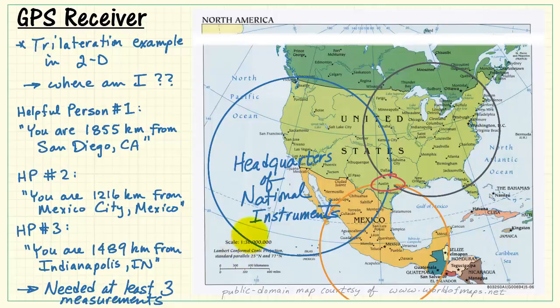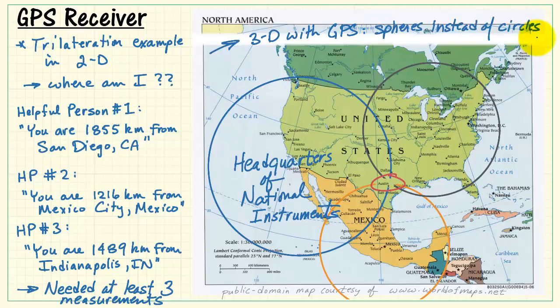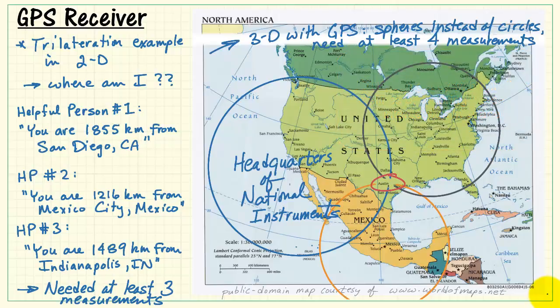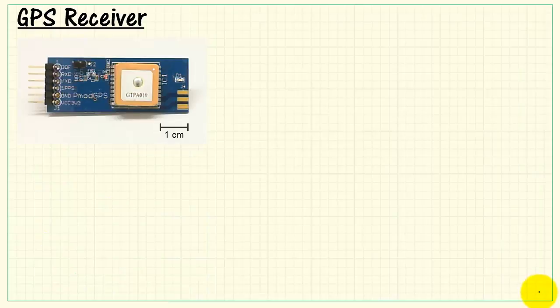Note that you needed at least three measurements. And when you promote this to three dimensions with GPS, you're working with spheres instead of circles, and you would need at least four measurements. Although it turns out you can get by with only three satellites in view by ignoring what amounts to the second intersection out in space.